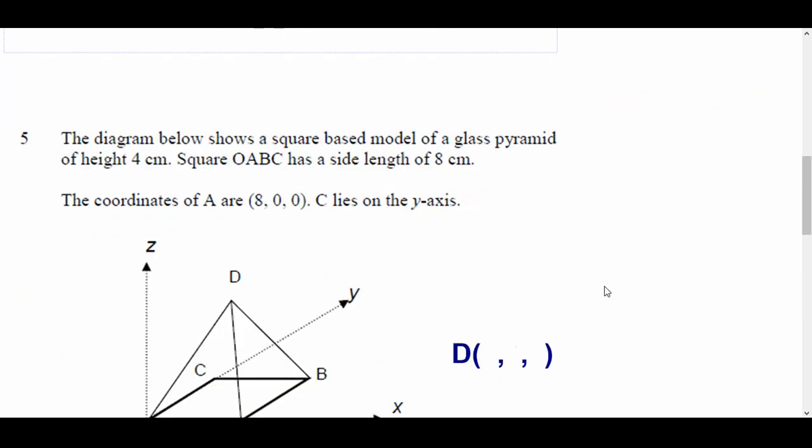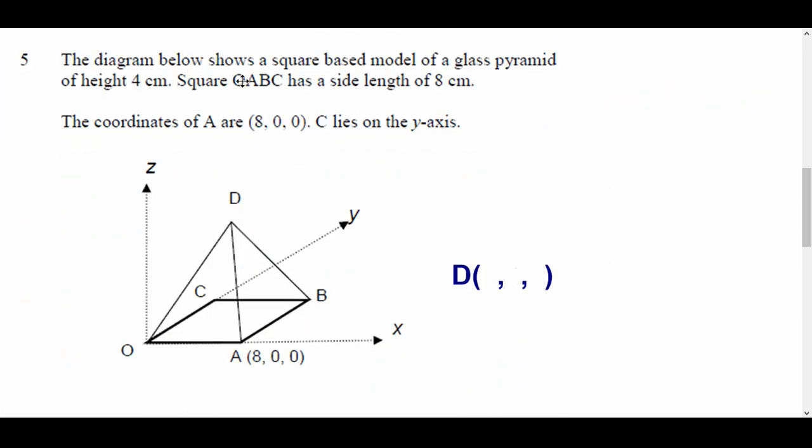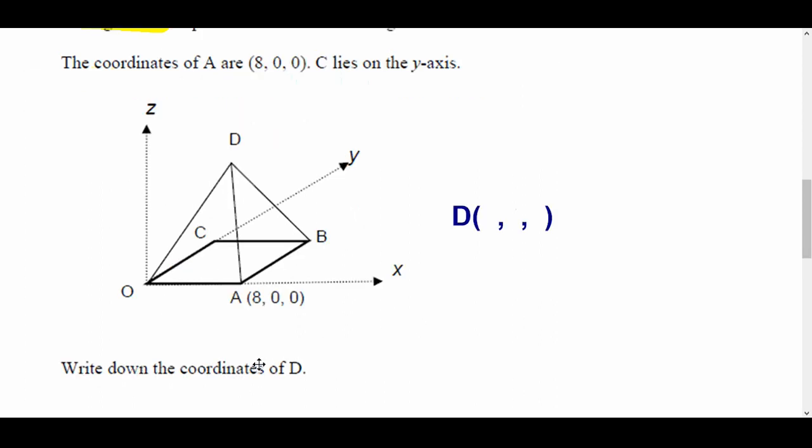Okay, let's go to question 5. The diagram below shows a square-based model of a glass pyramid of height 4 centimetres. So a couple of important bits there. The height is 4, some people missed that, and it's also a square-based model. Right, so we've got this diagram here, 3D coordinates. We've got x-axis, y-axis, and z-axis. It's telling us the coordinates of A is (8, 0, 0), and we're asked to work out the coordinates of D.